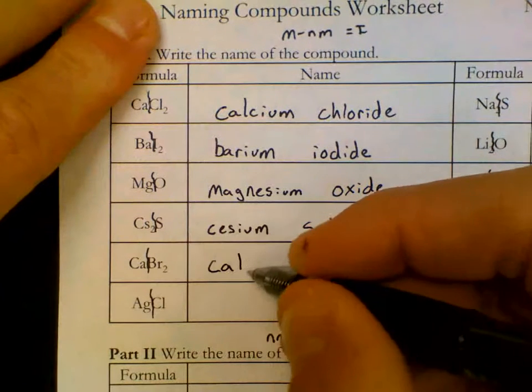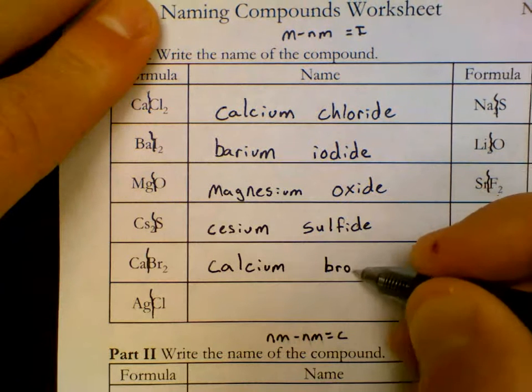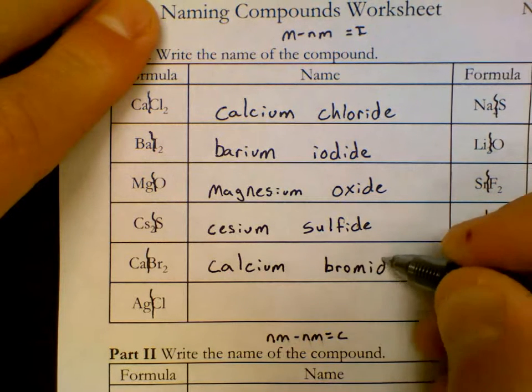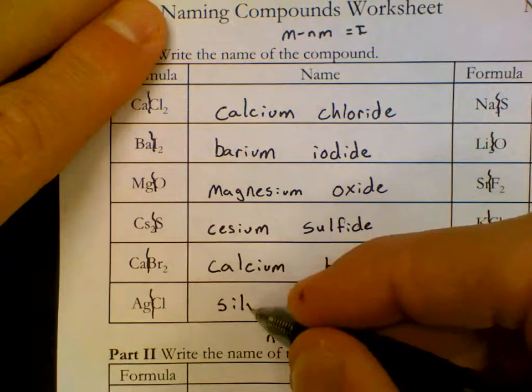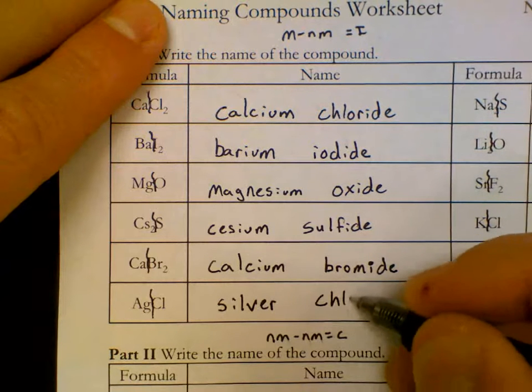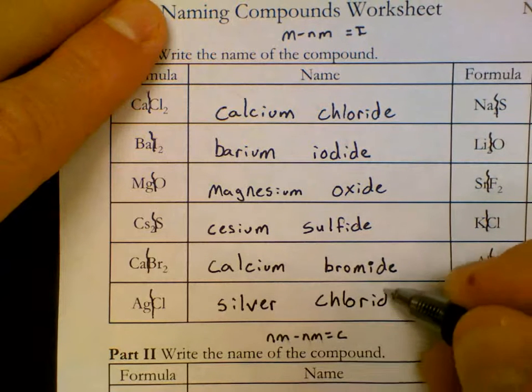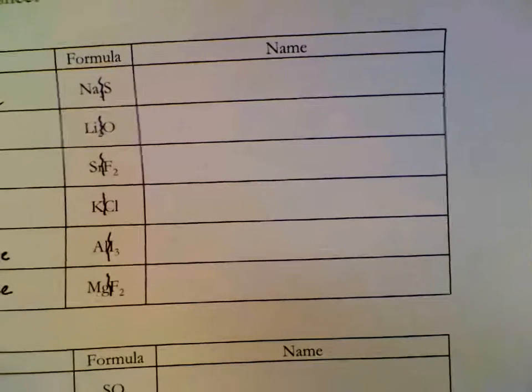Ca is calcium. Br is bromide. Bromine to bromide. Ag is silver. Full first name. Don't change those first names. Cl is chloride. It's important to make these last three letters very clear. Those are part of what makes names accurate or inaccurate.